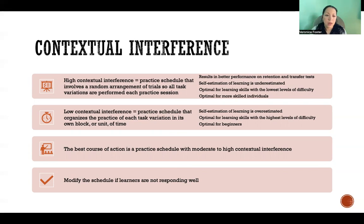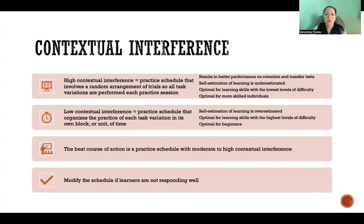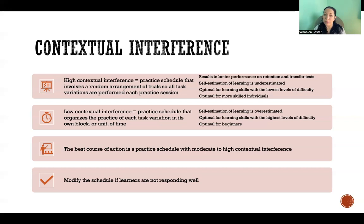Generally speaking, high contextual interference results in better performance on retention and transfer tests. An interesting phenomenon is that when there's high contextual interference, the person practicing tends to underestimate how much they learned compared to low contextual interference — where we tend to overestimate how much we learned. When we practice the same thing again and again, we feel very confident that we learned the skill, even though less learning probably took place.